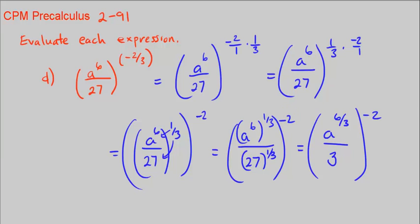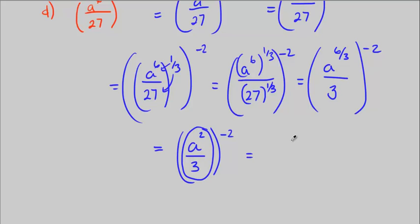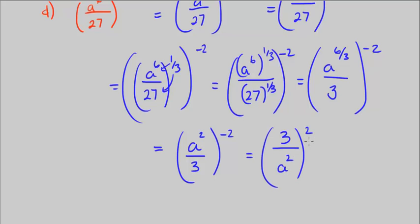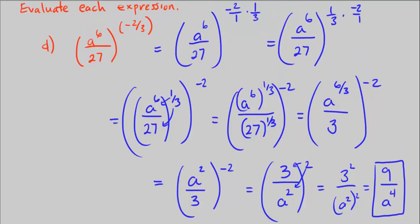So we have A to the 6 over 3 over 3, all to the power of negative 2. Simplifying: 6 divided by 3 is 2, giving A squared over 3, to the power of negative 2. To make the exponent positive, take the reciprocal: 3 over A squared, now to the power of positive 2. Distributing: 3 squared over A squared squared equals 9 over A to the 4th. So A to the 6th over 27, to the power of negative 2 thirds, simplifies to 9 over A to the 4th.